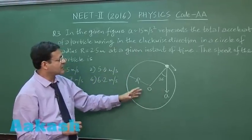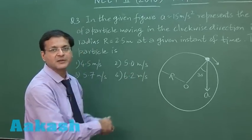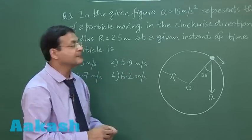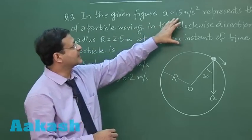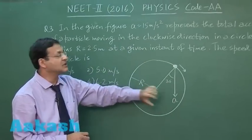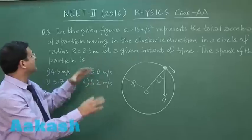So in the given figure, acceleration has been given as 15 meter per second square. As you can see here, this represents the total acceleration. You can clearly see this acceleration is not pointing towards the center - it is making some angle. That means it is a non-uniform circular motion.